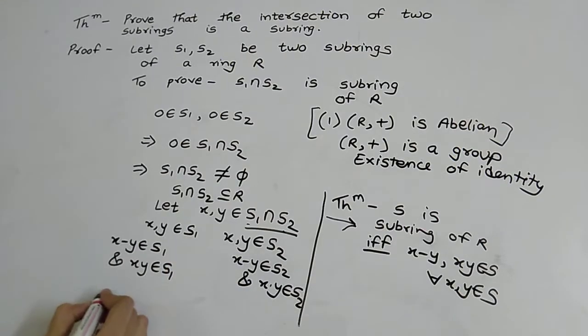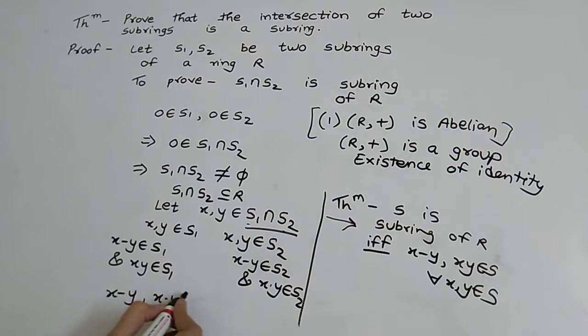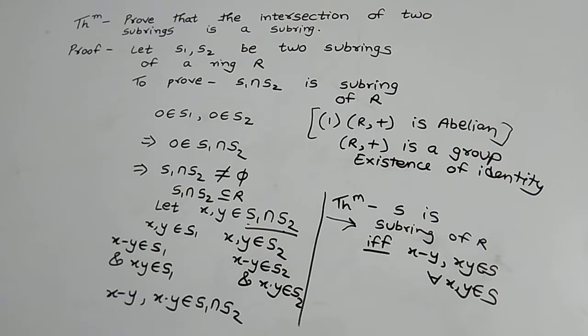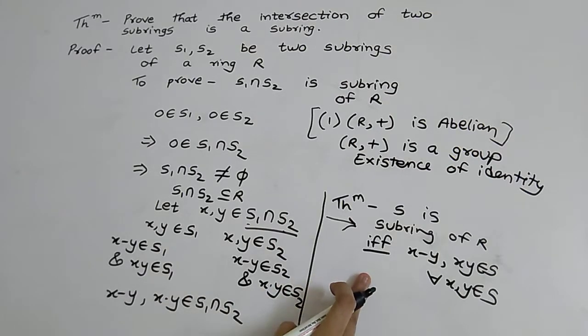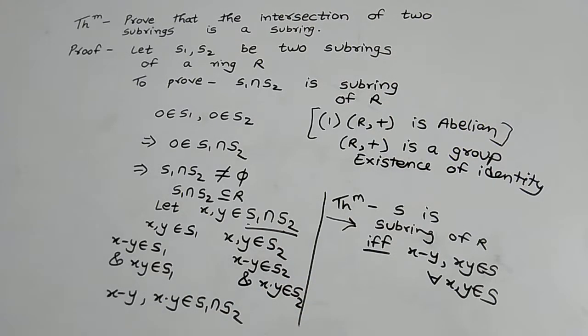Therefore x minus y and x into y belongs to S1 intersection S2. Now by this theorem we can say that S1 intersection S2 is a subring of ring R.